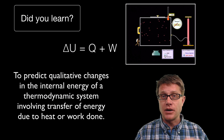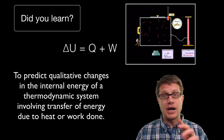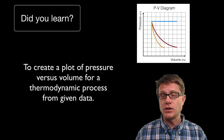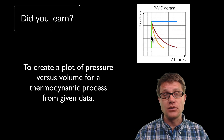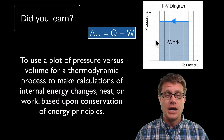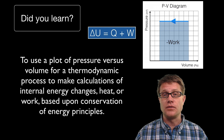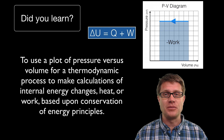Did you learn how internal energy in a system can change? It is really only two things: we could add heat Q, or we could do work W. Do you know, looking at a PV diagram, which of the processes is shown? Isobaric is the horizontal line, isovolumetric is the vertical line, isothermal is one curve, and adiabatic is another. Finally, could you find the area under the curve to determine how much work is being done by the gas? I hope so, and I hope that was helpful.